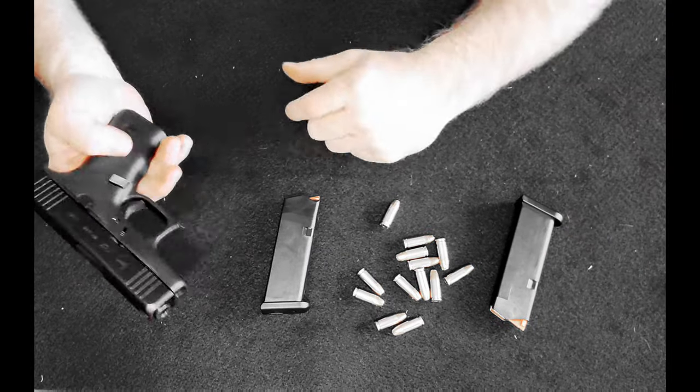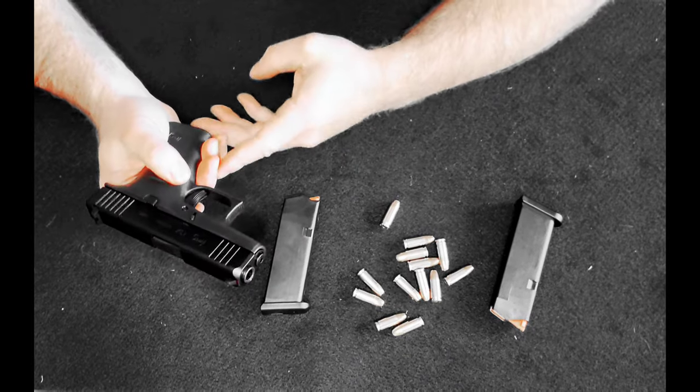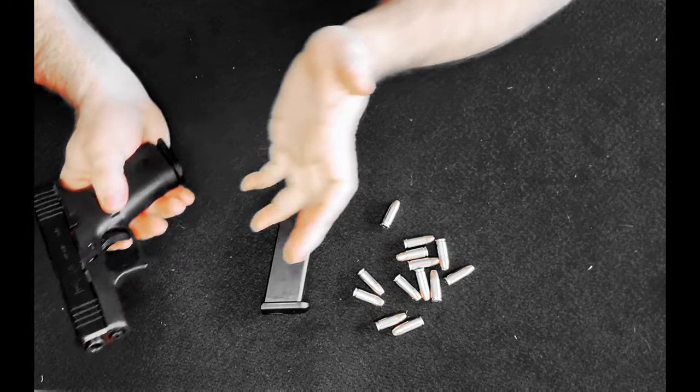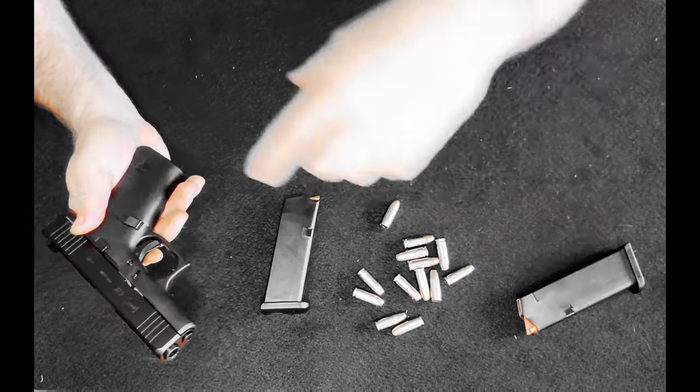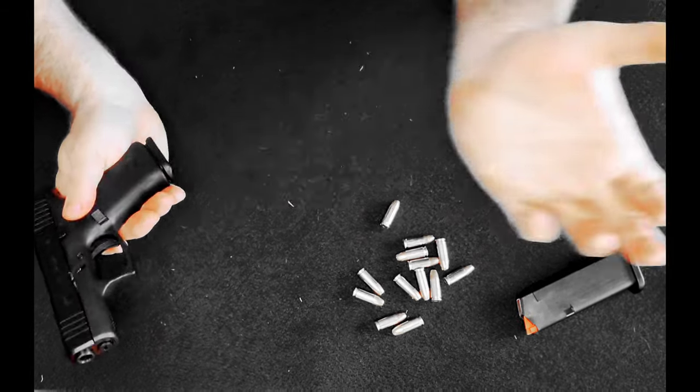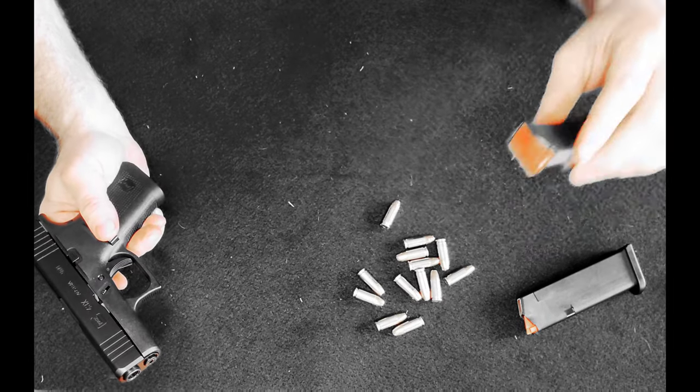Now because it is a metal magazine I will have to be swapping out the polymer mag release button to metal because you don't want to have a metal magazine up against polymer because metal will chew up the polymer. Vice versa, you don't want to have a metal mag release with polymer magazines going in because that mag release will chew up the polymer mags.